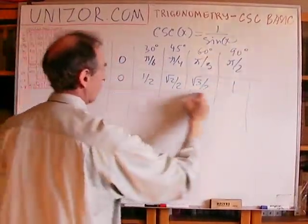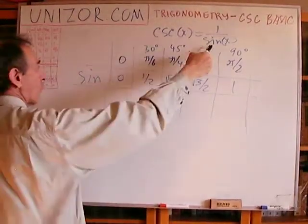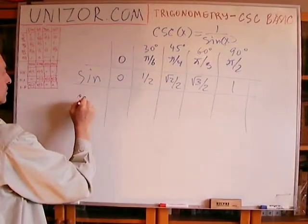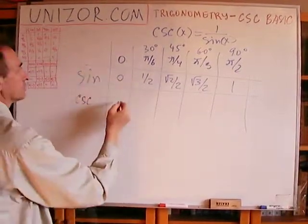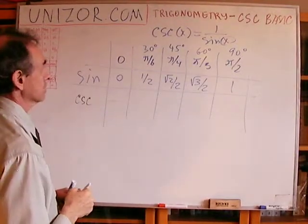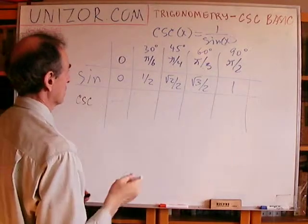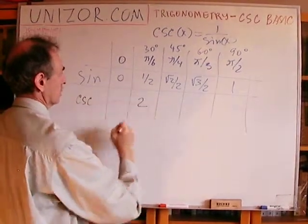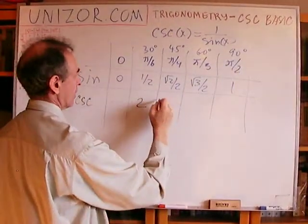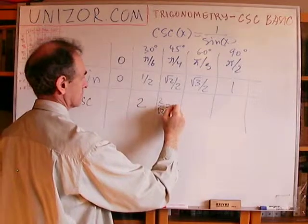So knowing that, what is the value of 1 over sine for these angles? The cosecant takes value of doesn't exist in this particular case because it's invert. This is 2. This is 2 over square root of 2, which is square root of 2.